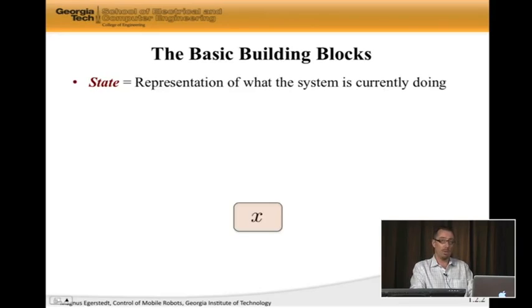Central to this is the notion of a state. The state represents what the system is currently doing, what state it is in. We're going to use X to describe what the state of the system is. This could be the position or the velocity of a robot, this could be the percentage of people that are infected by a certain epidemic. Ultimately, the state is the key thing that describes what the system is up to.